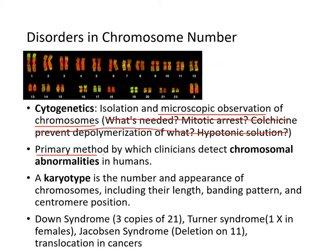A clinician will take a sample of cells, make them divide, and arrest them at mitosis using colchicine. Then a hypotonic solution ruptures the cells, a picture of all chromosomes is taken, and they are arranged by size from biggest to smallest to produce a karyotype. The karyotype shows the number and appearance of chromosomes including their length, banding pattern, and centromere positions.